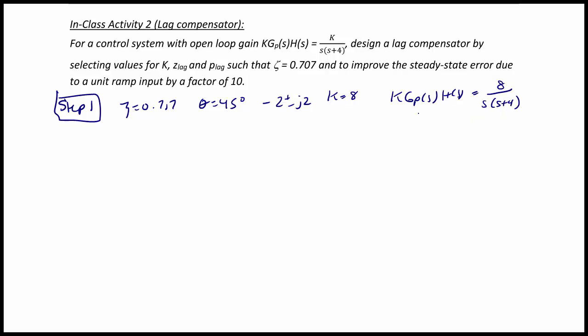And now we're ready to move on to step 6. Step 6 is to find the steady state error for this lead compensated system. So we're going to have kv which is equal to the limit as s goes to 0 of s times 8 over s times s plus 4. So kv equals 2, and the steady state error is equal to 1 over kv which equals 1 half.